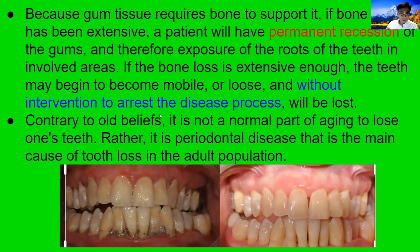Without any kind of intervention, gum disease will continue to destroy your teeth and bone, and you will lose the foundation and your teeth will come out one by one eventually. It is periodontitis disease that is the main cause of tooth loss in the adult population.